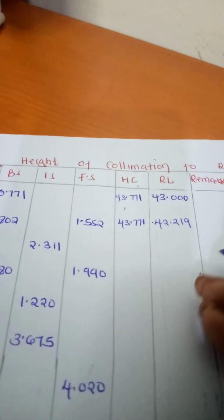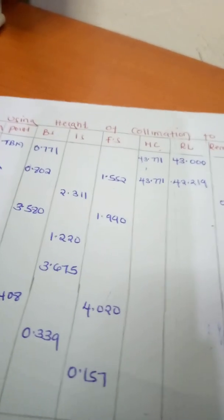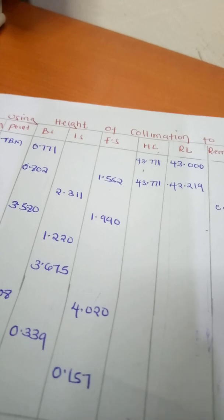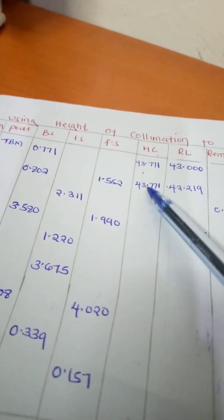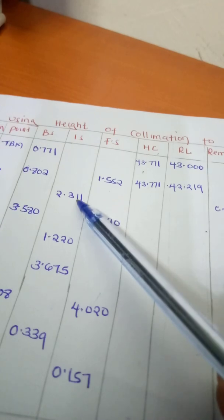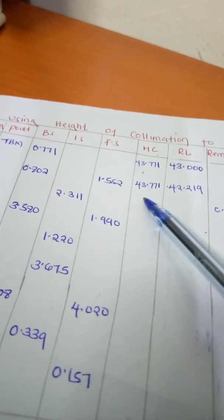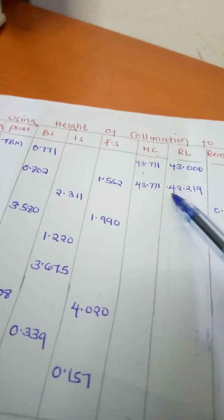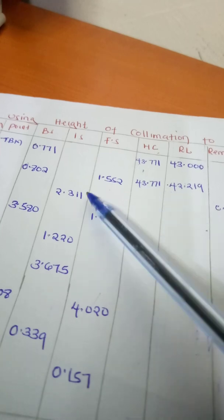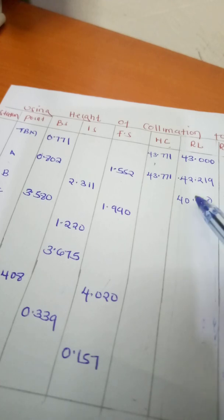Now at point B we have a change point, denoted CP. We have a foresight of 1.311. To find the reduced level at the change point, we take the reduced level 42.219 minus 1.311, which gives us a reduced level of 40.710.